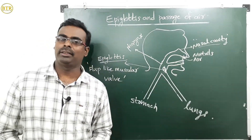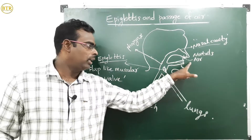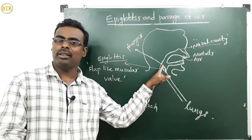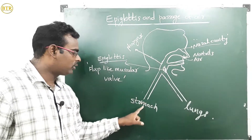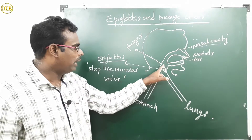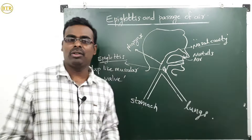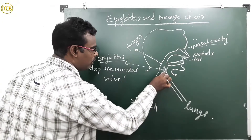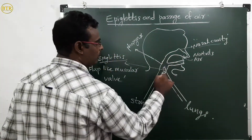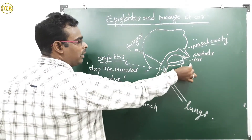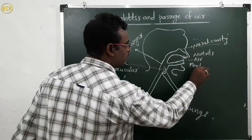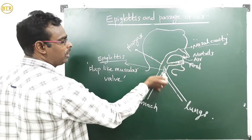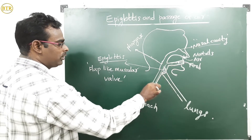What is the function of the epiglottis? When we take food through the mouth, it reaches the buccal cavity, then it goes to the pharynx. Food has to go to the stomach, but there may be chances for it to enter into the lungs also. In that condition, the epiglottis closes the way to the lungs, so food reaches the stomach only.